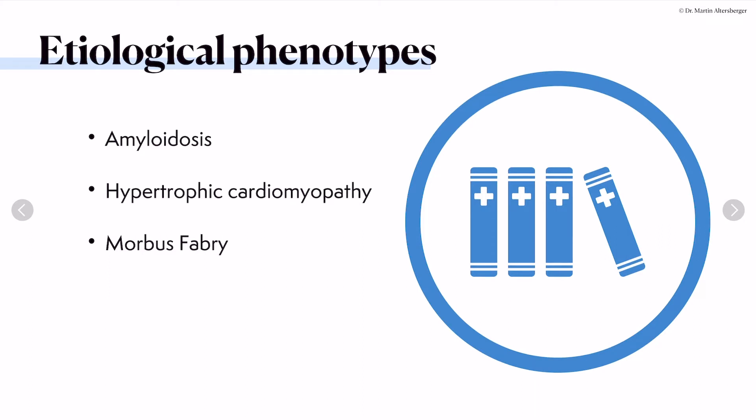The etiological phenotypes, on the other hand, have a specific etiology which we may be able to treat. In the case of amyloidosis, we have medication at hand. In the case of hypertrophic cardiomyopathy, we will very soon have a potential medication at hand, and in the case of Morbus Fabry we can also provide medical treatment. So etiological phenotyping is very important - when you perform echocardiographies, think about these etiological phenotypes and direct your patients toward the right treatment.